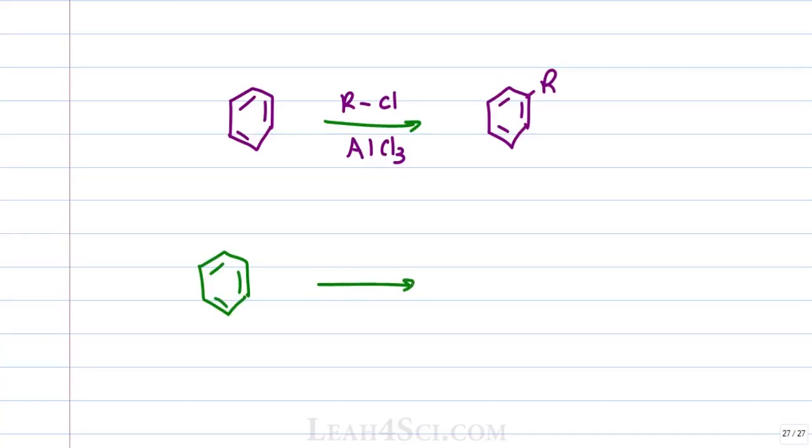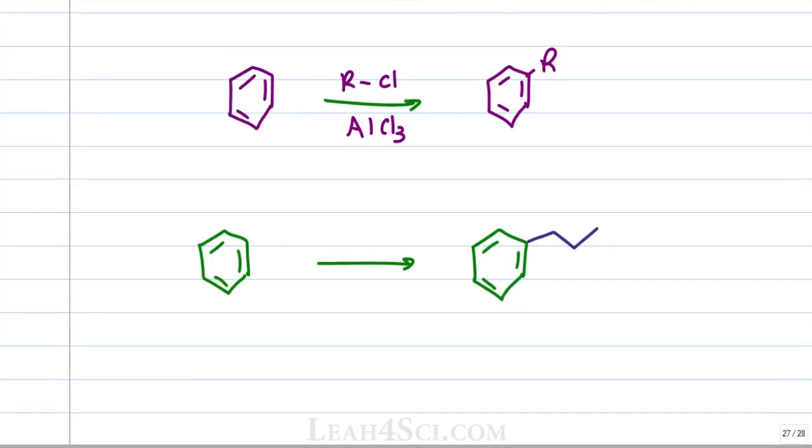This becomes problematic when you're trying to form a product that has the carbon group attached from a primary carbon with a secondary or tertiary carbon directly near that. For example if you're trying to form propylbenzene from propane. If you try to carry out this reaction using Friedel-Crafts alkylation and your reagent includes 1-chloropropane with AlCl3, you're not going to get your desired product.